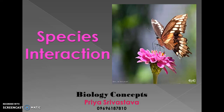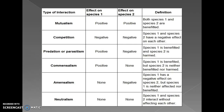Hello friends, we are discussing module two, that is ecology. Today my topic of discussion is species interaction. It is a very interesting topic and very useful for any competitive exams. Basically, species interaction is a biotic interaction. It may be of different types: mutualism, competition, predation, commensalism, amensalism, and neutralism.